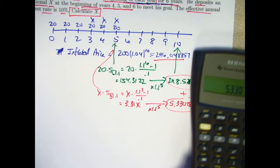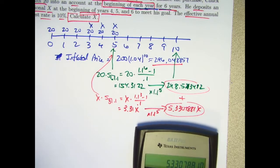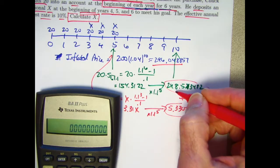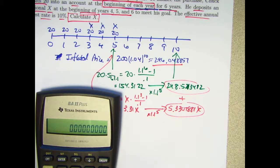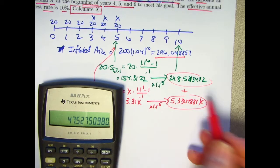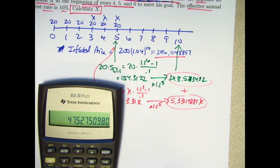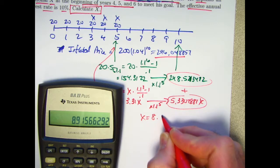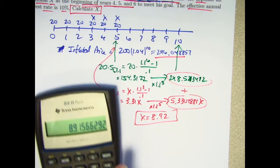Let me just go ahead and do it with the calculator here. We are going to need to take, we're going to need to subtract 248.5213472 from both sides. So let me type in 296.048857, I'm using more decimals than I need, but I'm just playing it safe. Minus 248.5213472. And then we need to divide by 5.33 to solve for x. Divide by 5.3307881. The answer for x is 8.92.